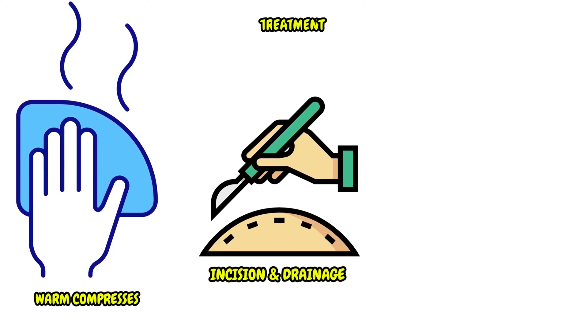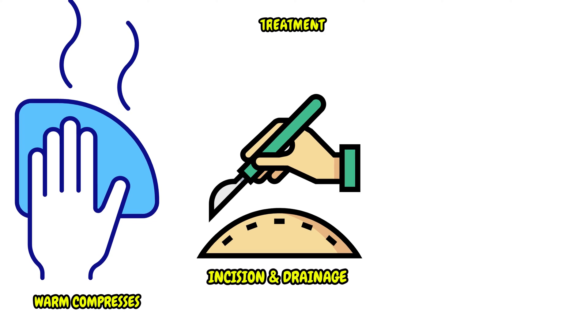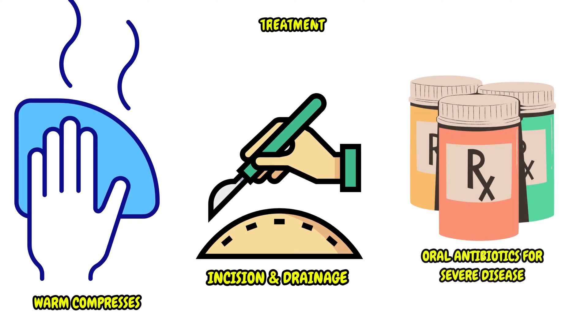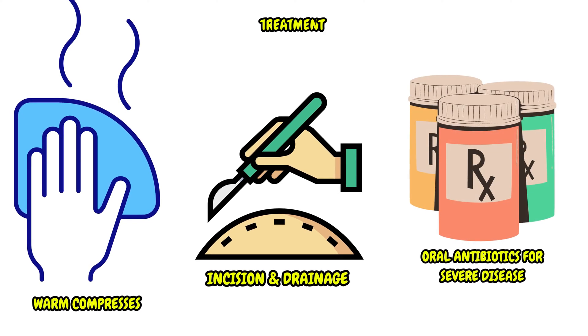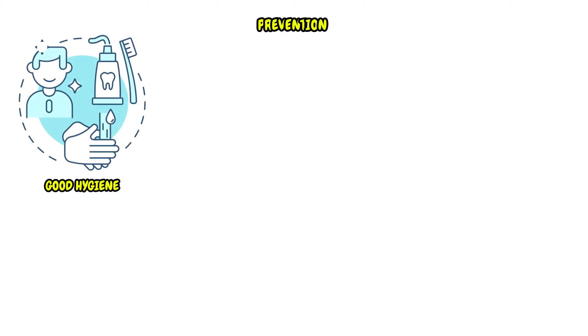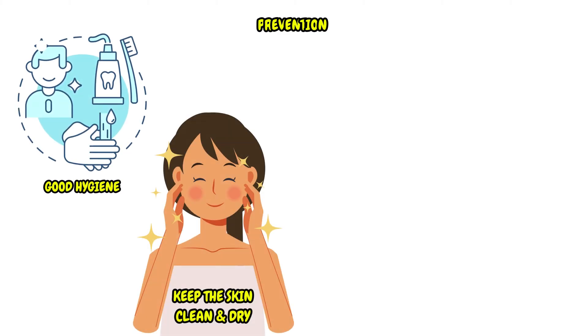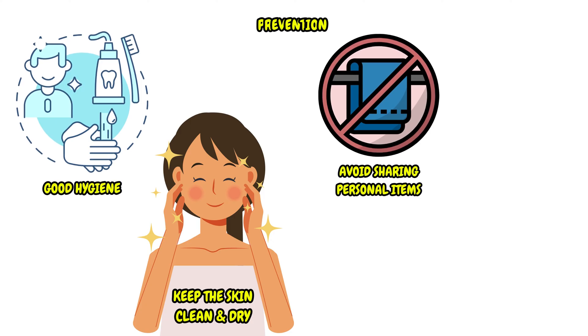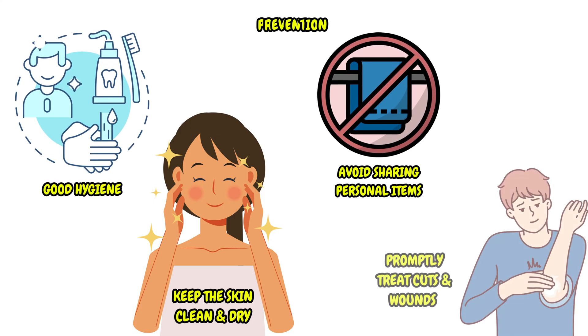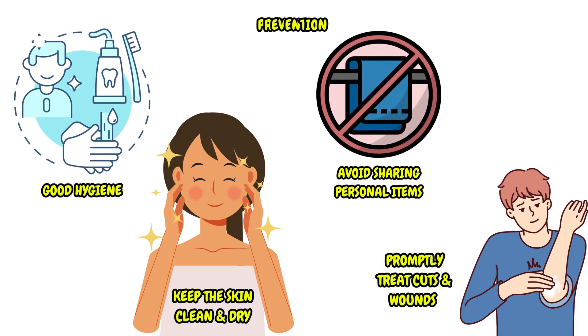If the infection is severe with signs of systemic involvement, such as fever, oral antibiotics may be required. Preventive measures for furuncles include practicing good hygiene, keeping the skin clean and dry, avoiding sharing personal items like towels or razors, and promptly treating any cuts or wounds to prevent bacterial entry.